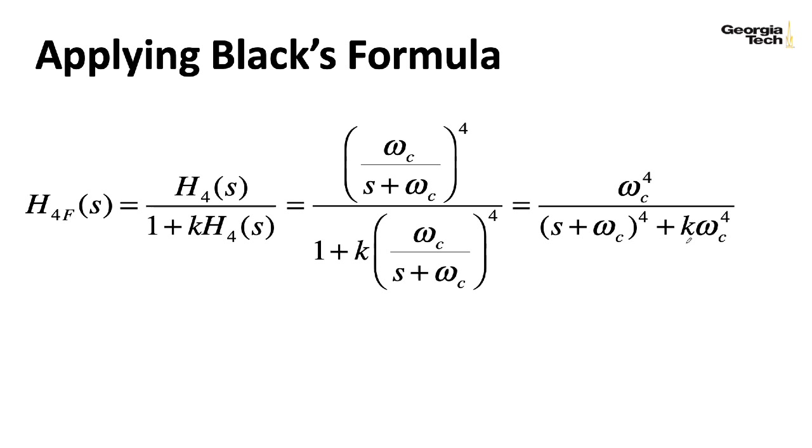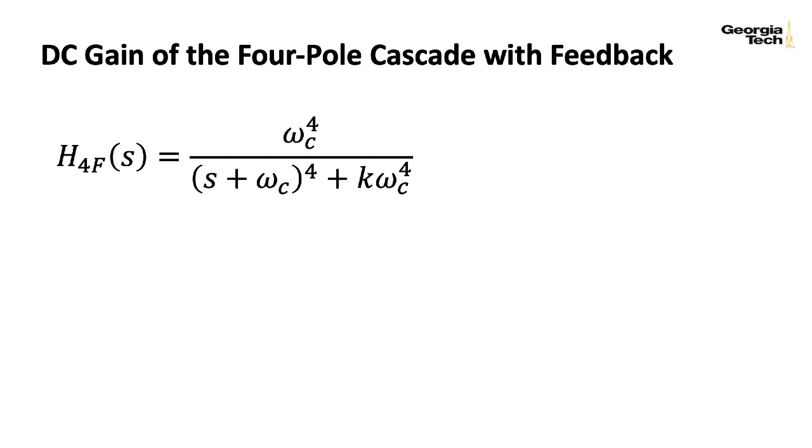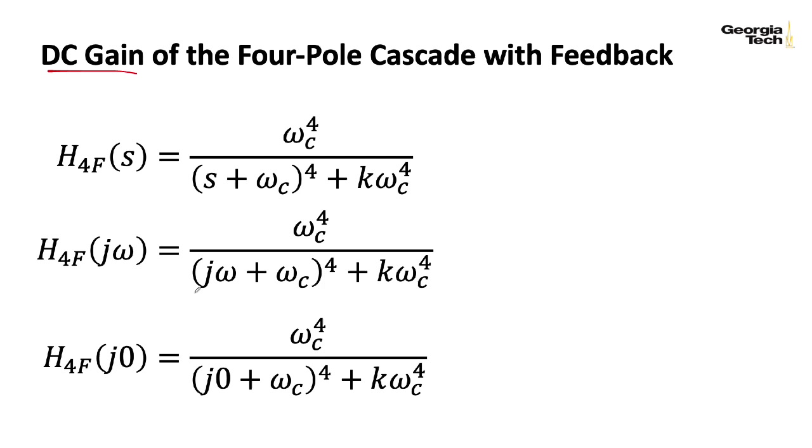All right, so here's our transfer function. Let's plug in j omega for s to get the frequency response. This is still pretty complicated. Let's look at a special case and figure out what the gain at a frequency of zero is, the dc gain. So if I plug in zero for omega, this term here goes away, and I wind up with a bunch of omega c to the fourth factors. This one goes away, this one goes away, this one goes away. They all cancel, and then I'm left with 1 over 1 plus k.